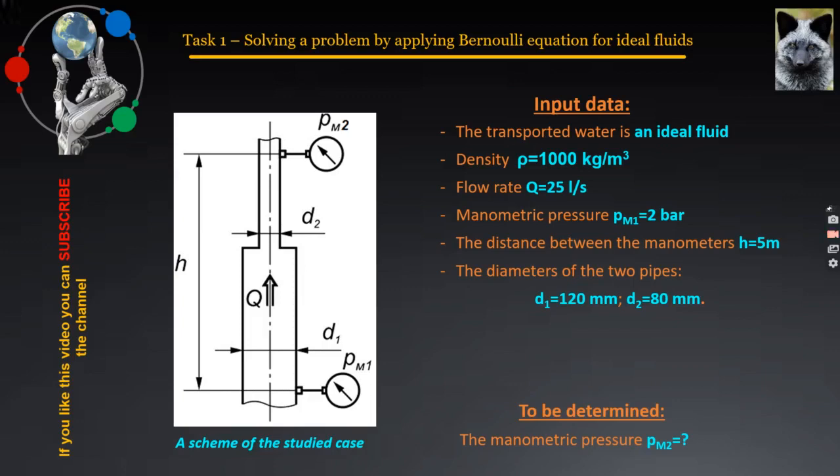I propose to perform step 0 now, converting the necessary parameters to present them in their basic units of measurements. In this case, these are flow rate, which is going to be 0.025 cubic meters per second. The manometric pressure PM1, which is going to be 200,000 Pa, taking into account that one bar is equal to 100,000 Pa. As well as the two pipes diameters, where D1 will be equal to 0.12 meters and D2 will be equal to 0.08 meters. In this task, the manometric pressure PM2, measured in the second pipe, must be found.